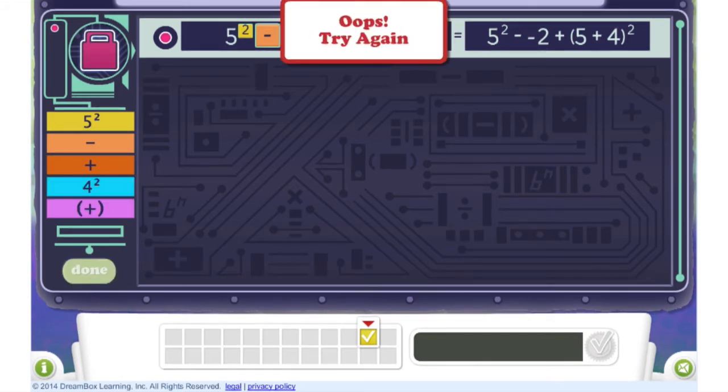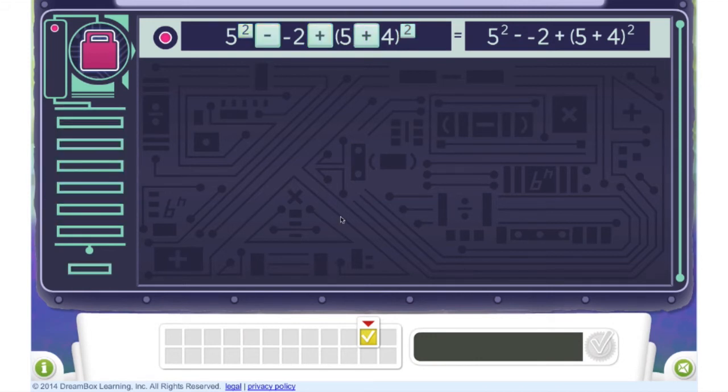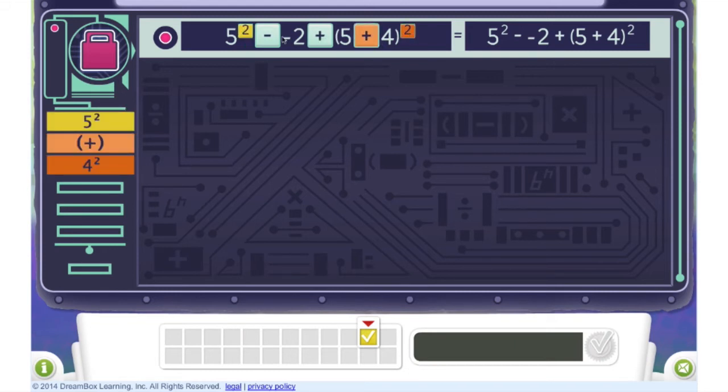Here the student chooses an exponent and subtraction operation first, which is acceptable for this expression. But the student is shown that the final three steps are in an incorrect order, and she is given a chance to start over.